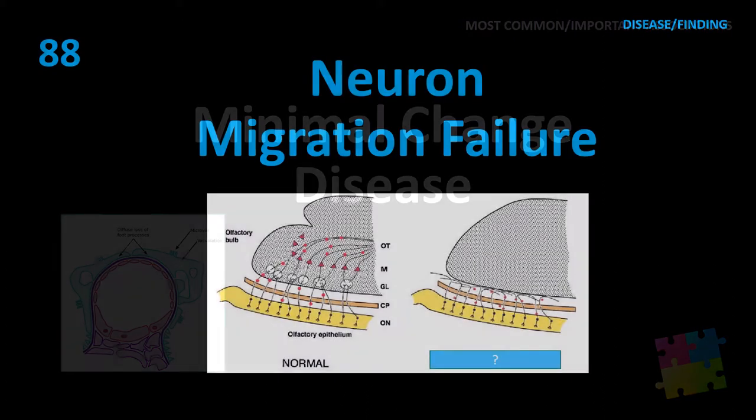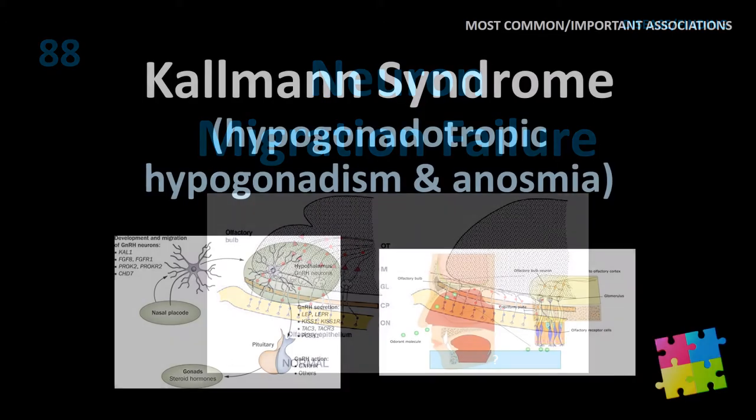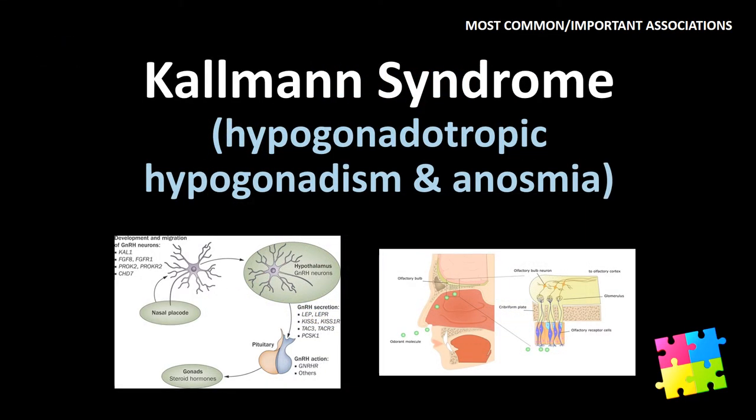Item 88: Neuron migration failure — Kallmann syndrome: hypogonadotropic hypogonadism and anosmia.